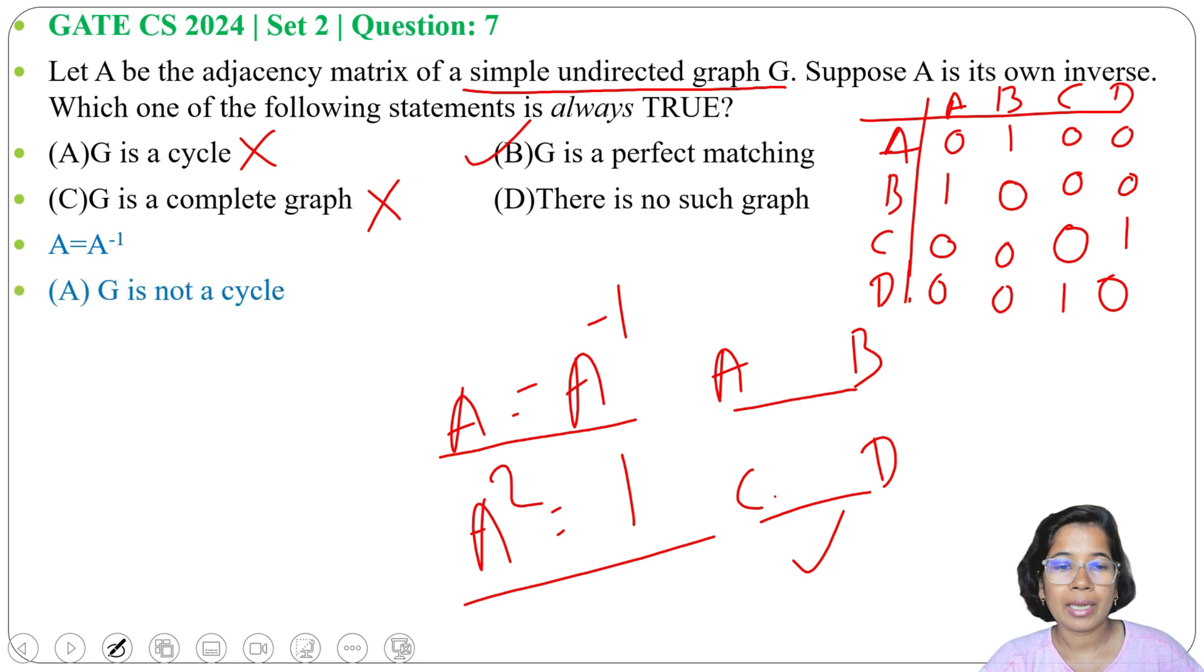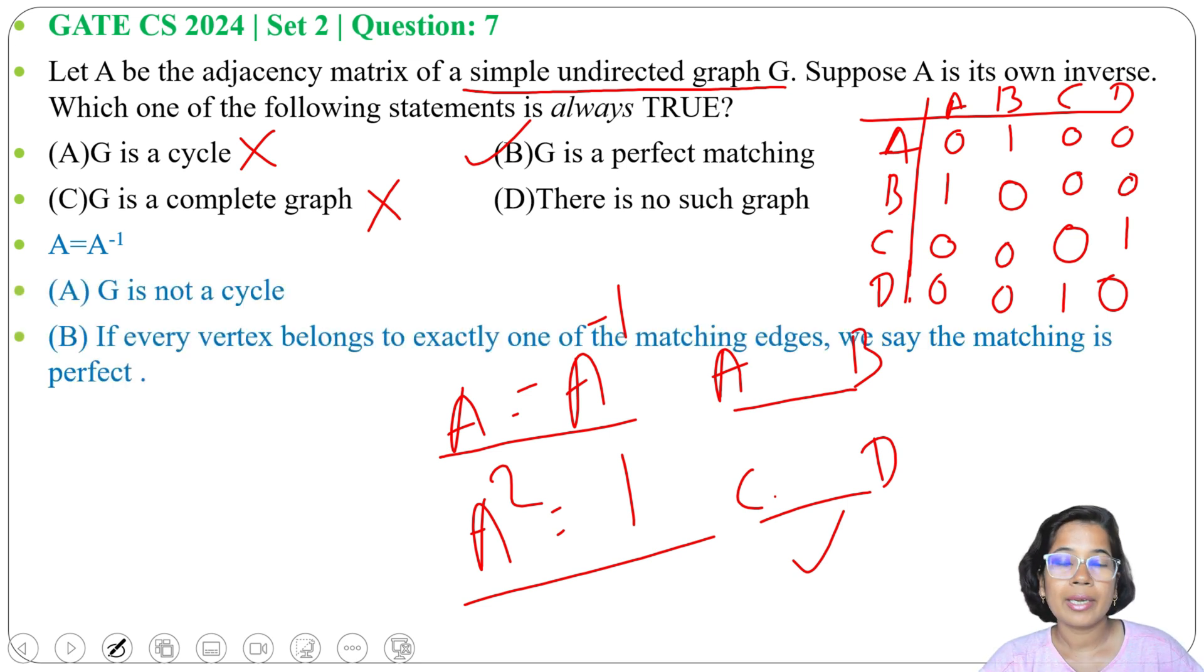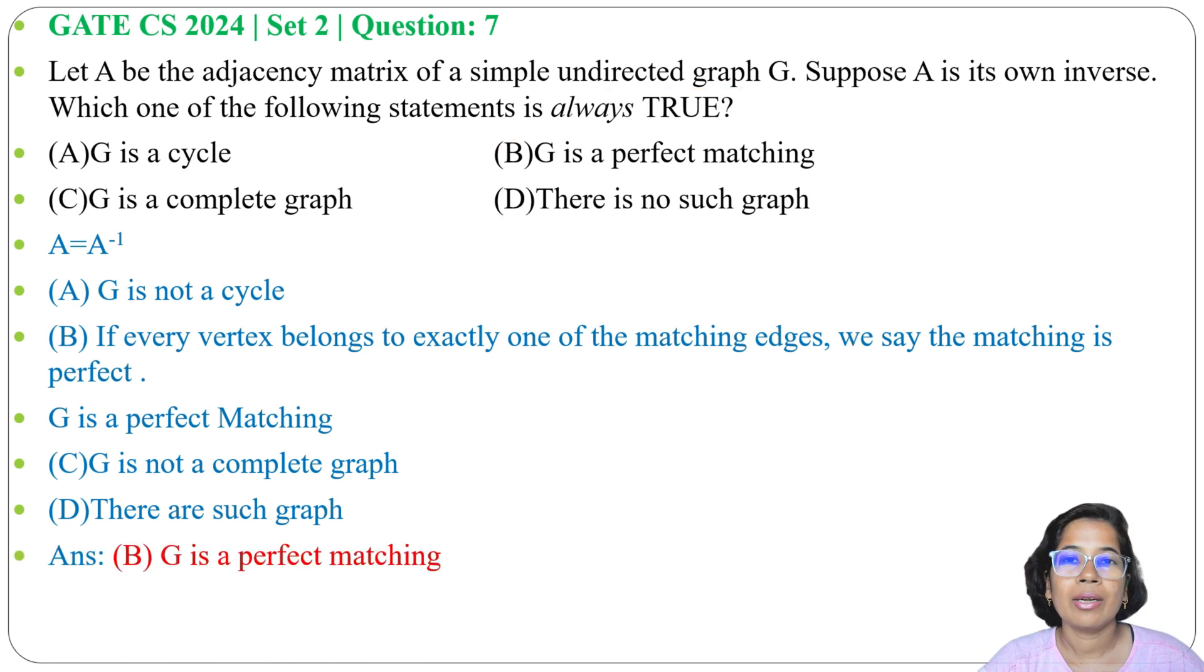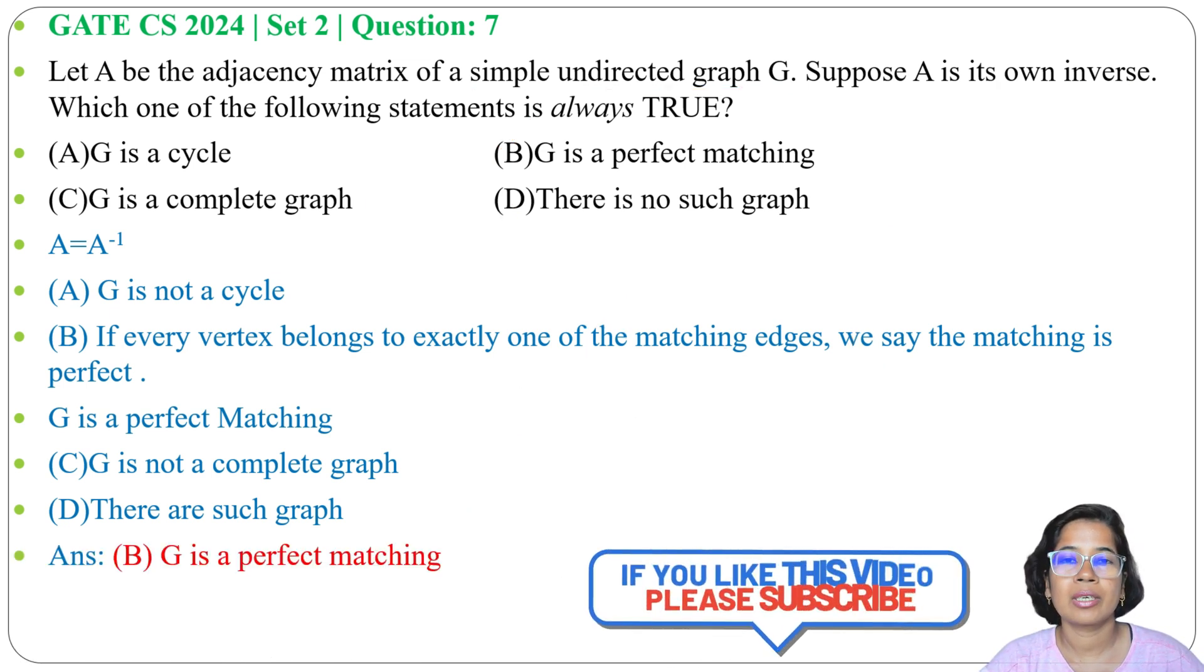Then option D: there is no such graph. We already saw there are such graphs possible. So option D is also wrong. So what will be the answer? Answer will be option B: G is a perfect matching.